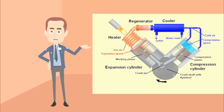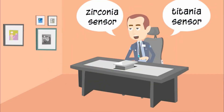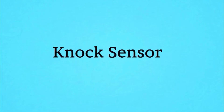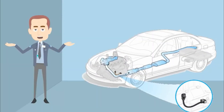Oxygen sensor measures the proportion of oxygen in fuel and the amount of fuel consumed by the engine. There are two types of oxygen sensors: zirconia and titania. Knock sensor contains a crystal that detects mechanical stress and produces a voltage when the car knocks. It also allows different grade fuel without any type of engine problem, and it is fixed in the engine body.